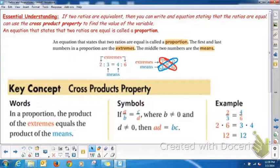So if a over b equals c over d, where b and d are not zero, then when you multiply a times d and b times c, you should get the same product.